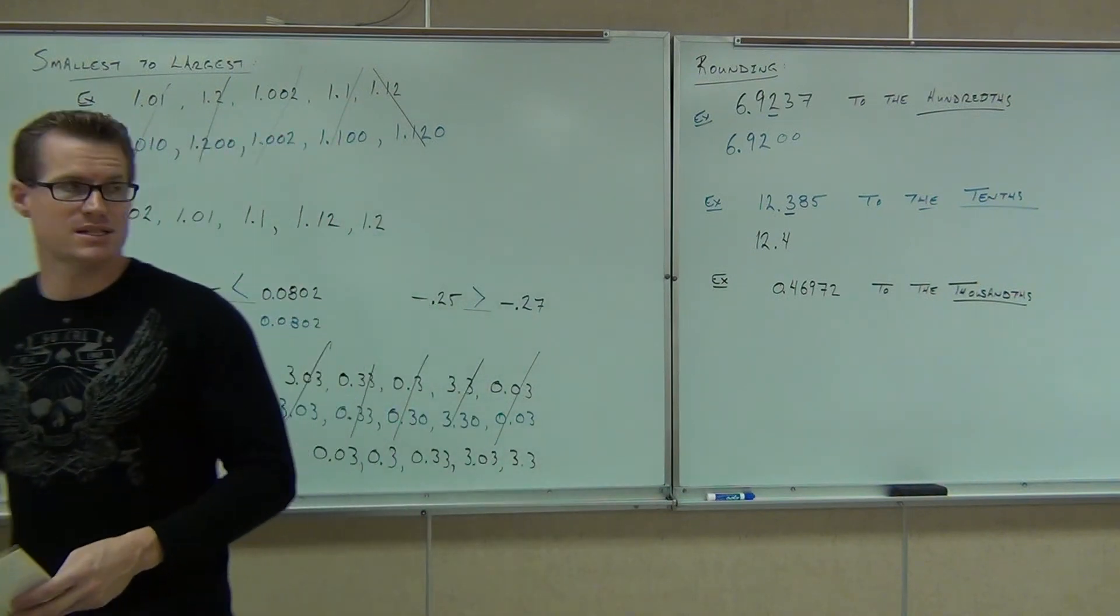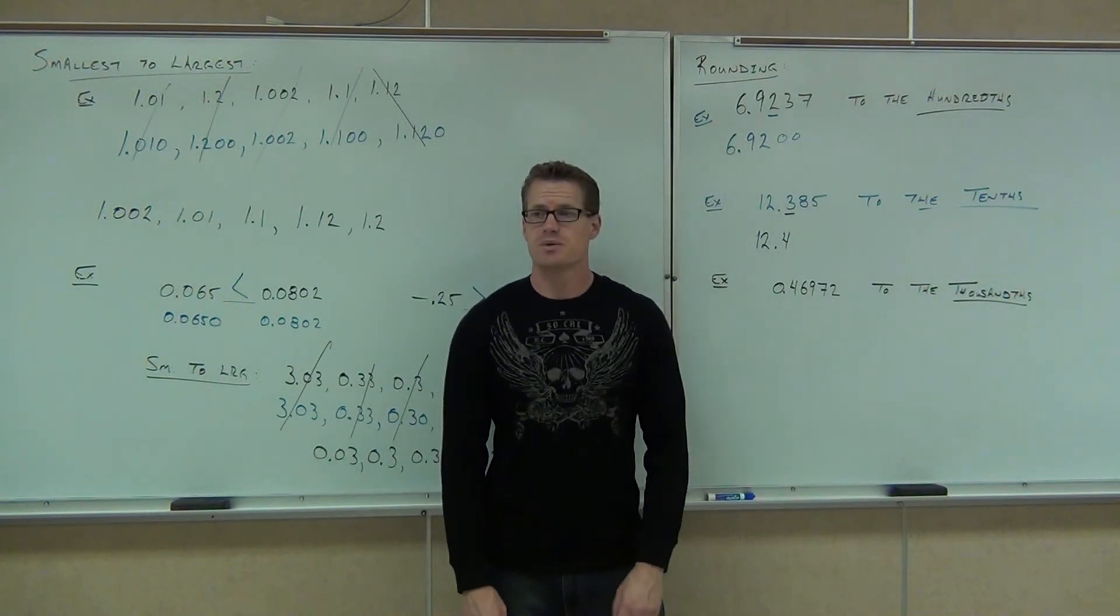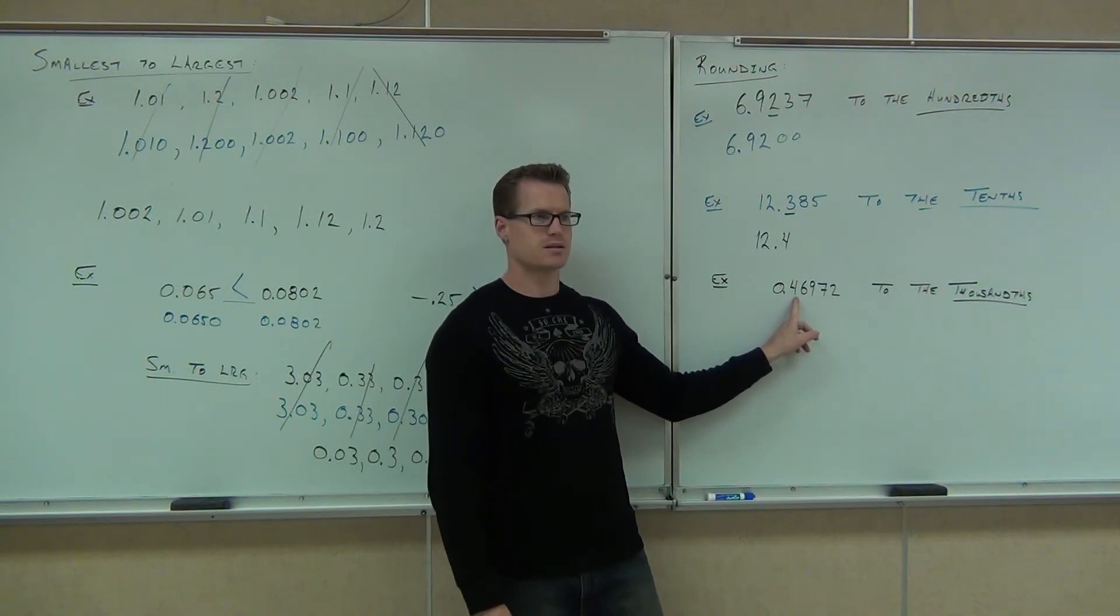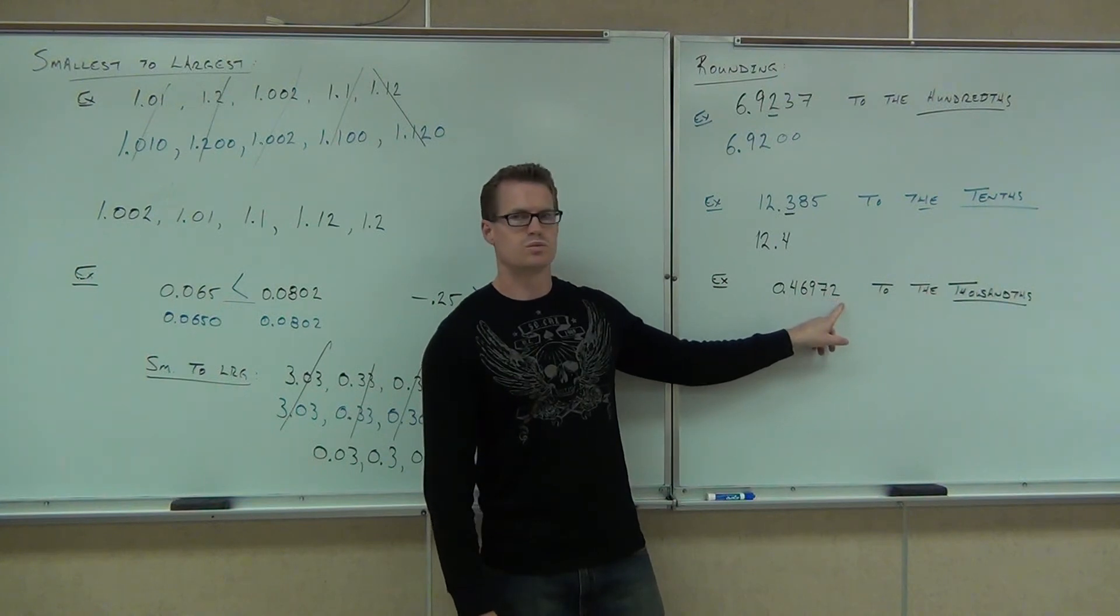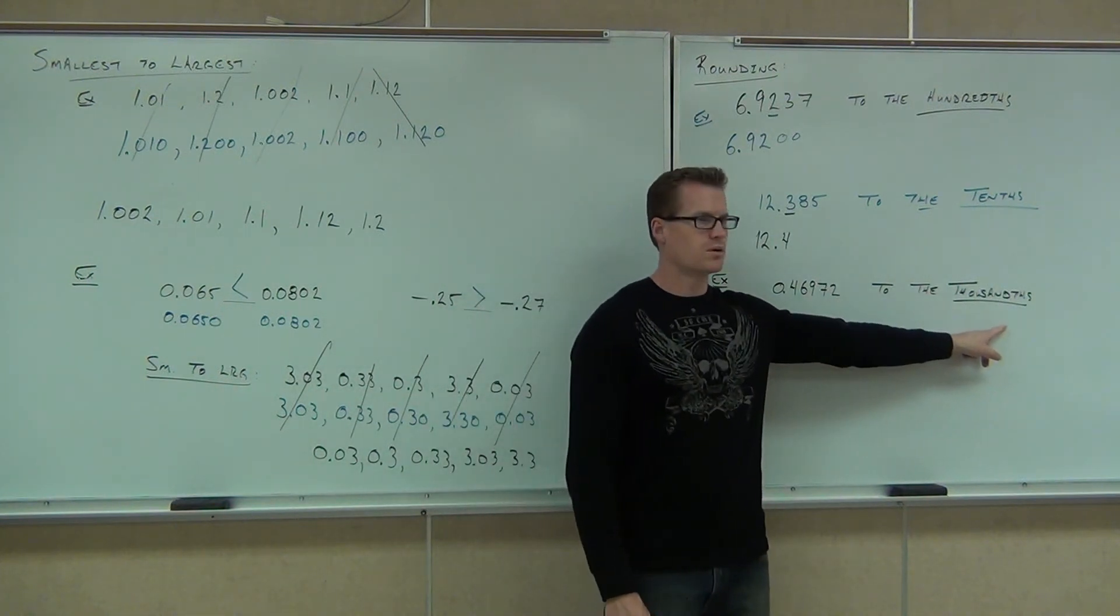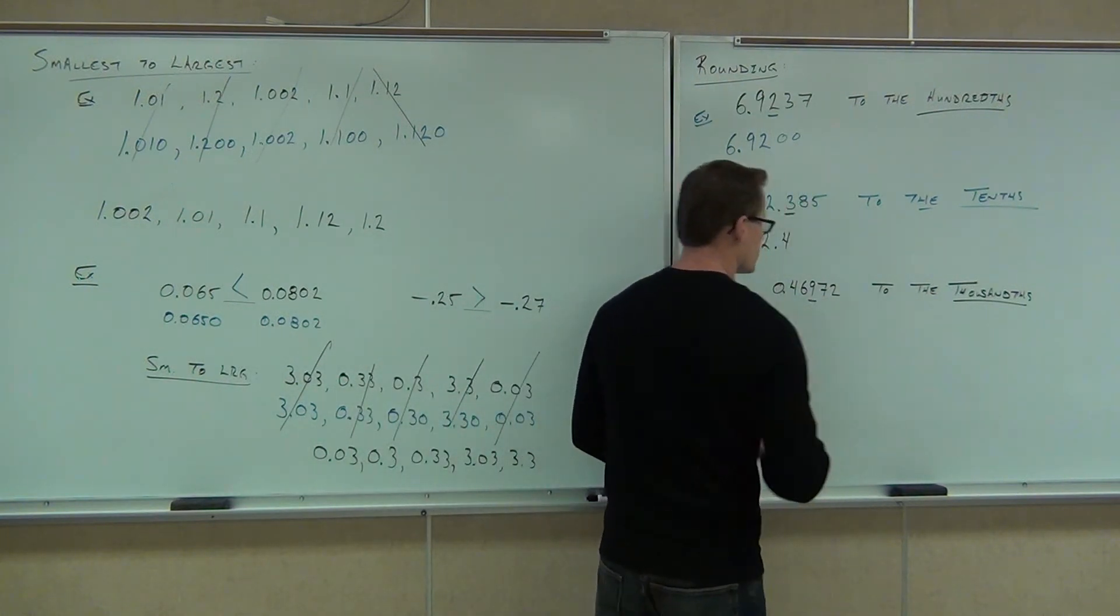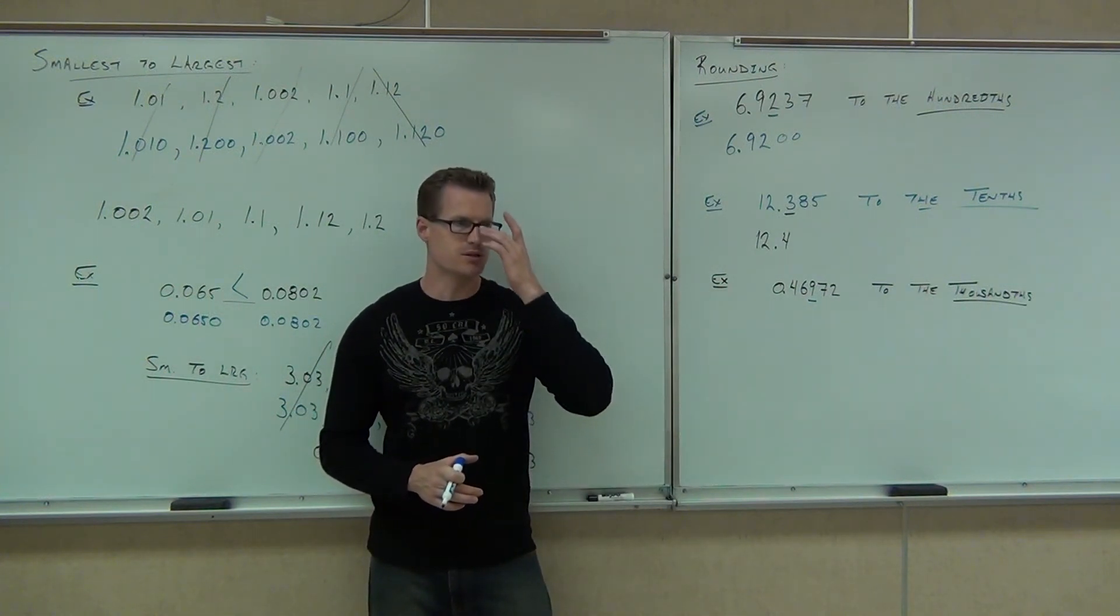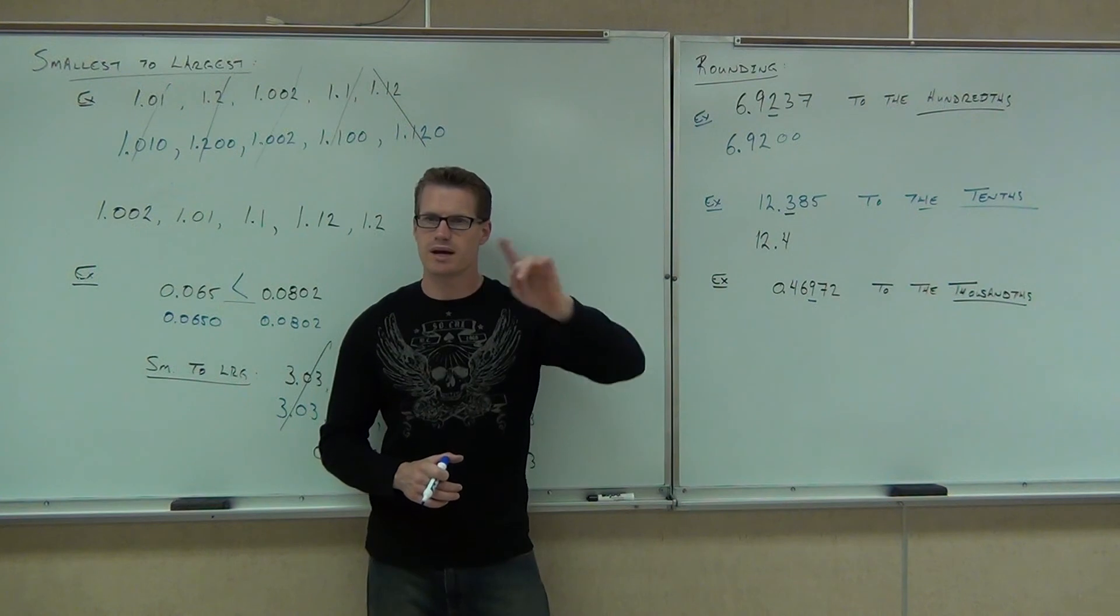Okay, 0.46972 to the thousandths. Let's identify these place values. What is the four? Tenths. What is the nine? Thousandths. What's the seven? Ten-thousandths. What's the two? Hundred-thousandths. Which digit are we looking for? Thousandths. That's the nine. Watch carefully up here. If we look at the nine right now, that is the thousandths. We look at the digit to the right. The digit to the right is a seven. Does a seven say to move the nine up? Yes.